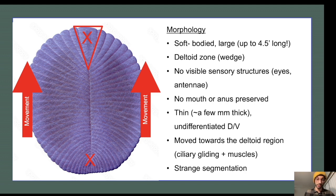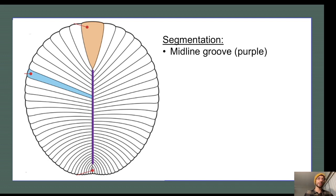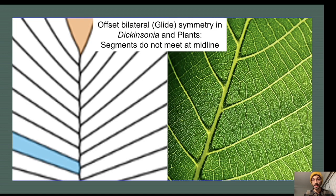Dickinsonia's most obvious feature, and the largest problem for its classification, was actually its segmentation. Its segments were arranged around a midline groove — you see it in purple. Unlike any animal you'd see today, these segments were not arranged symmetrically. They had glide radial symmetry, or glide symmetry — an offset bilateral symmetry where individual segments don't touch at the midline, just like the veins on a leaf that you see right there.